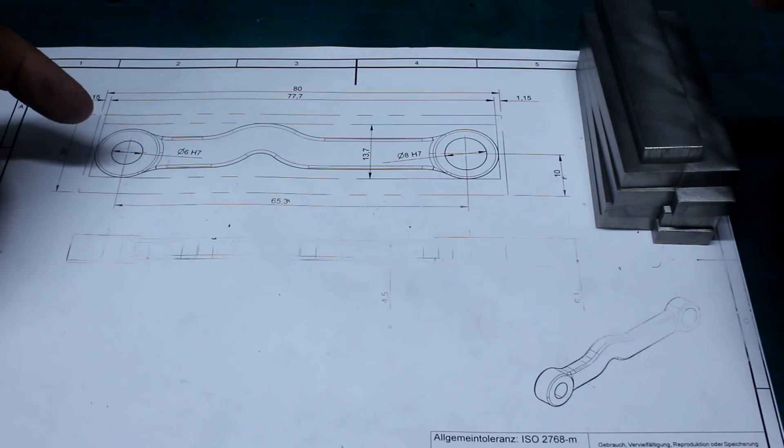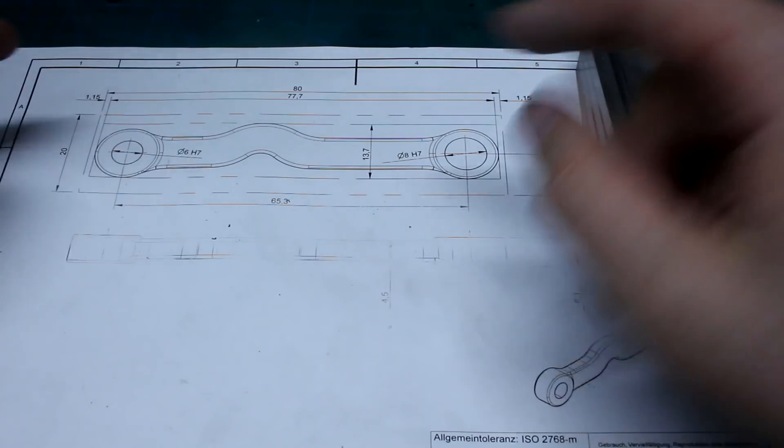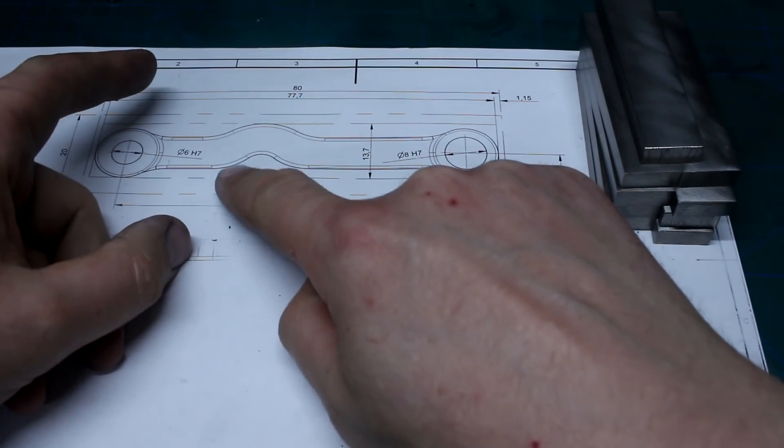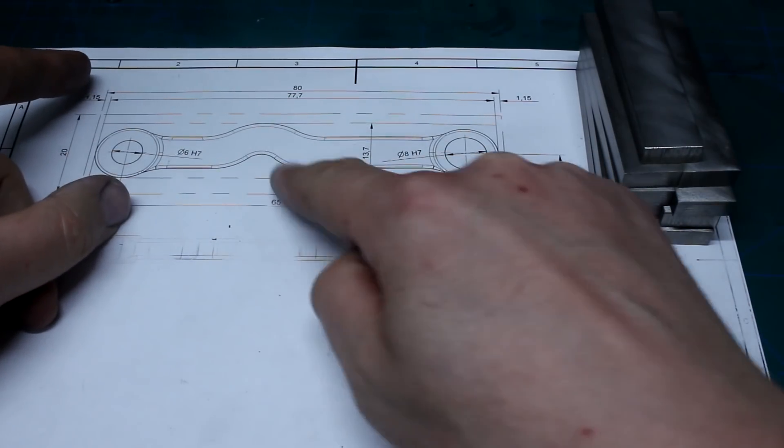Hey, welcome back. Let's make a part, or eight parts. We need to make this connecting rod with a little bit of a kink in it.